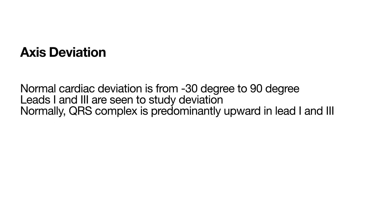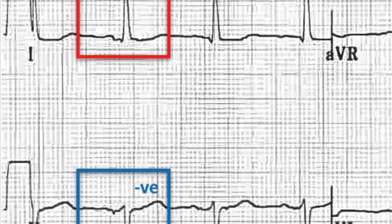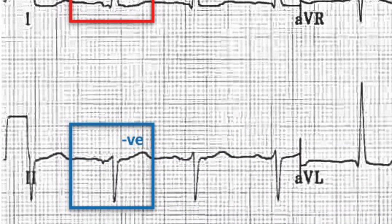Axis deviation. Normal cardiac axis is from minus 30 degree to plus 90 degree. To study axis deviation, we usually see leads 1 and 3. Normally, QRS complex is predominantly upward in lead 1 and lead 3. In left axis deviation, prominent R wave is seen in lead 1 and prominent negative deflection, either Q wave or S wave, in lead 3.